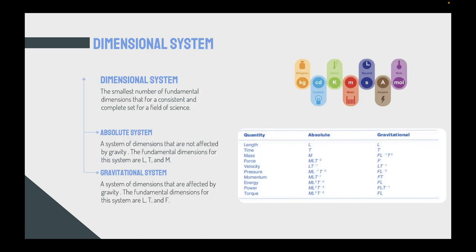The dimensional system: the smallest number of fundamental dimensions that form a consistent and complete set for a field of science, that's what we call a dimensional system. The dimensional system is split into two systems. We have the absolute system and we have the gravitational system. Absolute system is the system of dimensions that are not affected by gravity. The fundamental dimensions for this system are length, time, and mass.